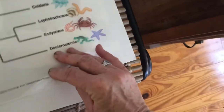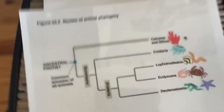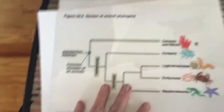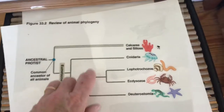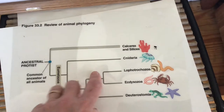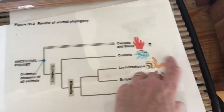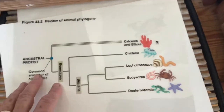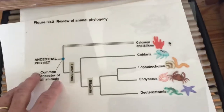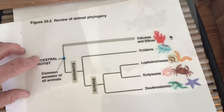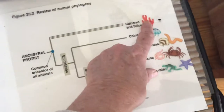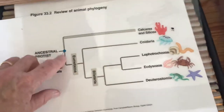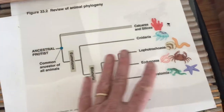Looking at the phylogenetic tree, we can see where these groups are positioned. The metazoa includes these organisms, and the eumetazoa is everything else beyond the sponges.